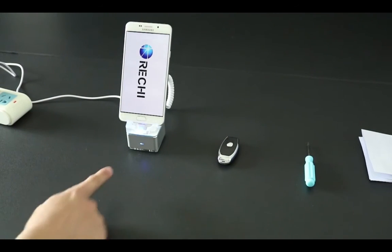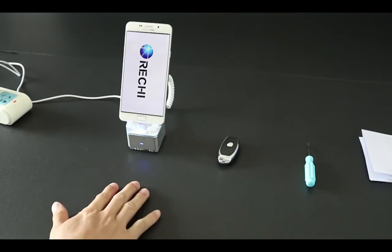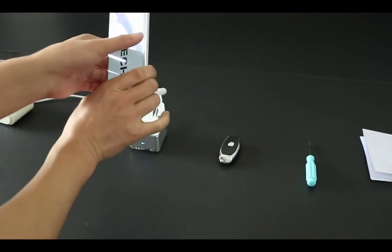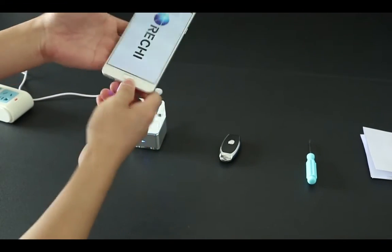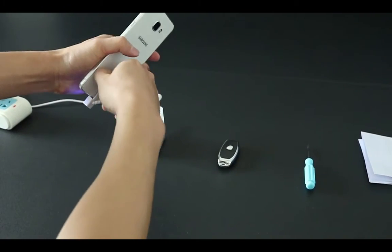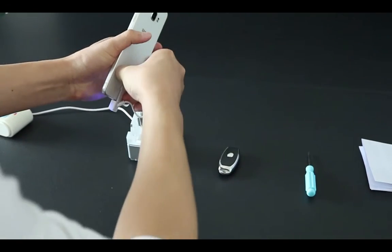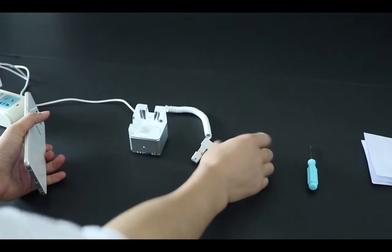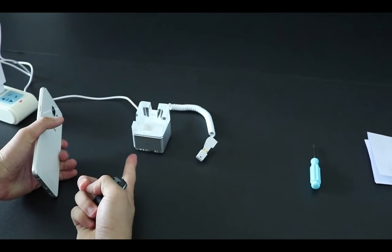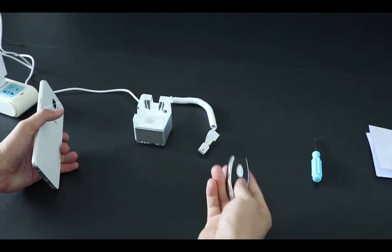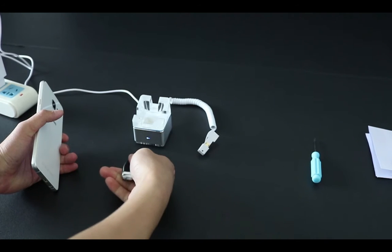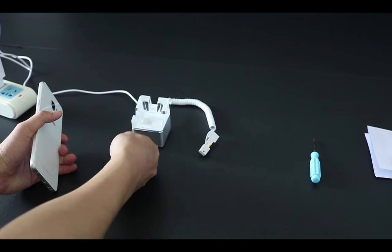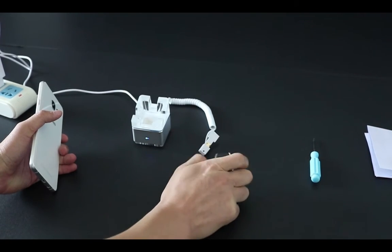The security stand now works. If someone wants to steal the smartphone, the alarm will sound. We use the remote control to disarm the security stand and remove the alarm.